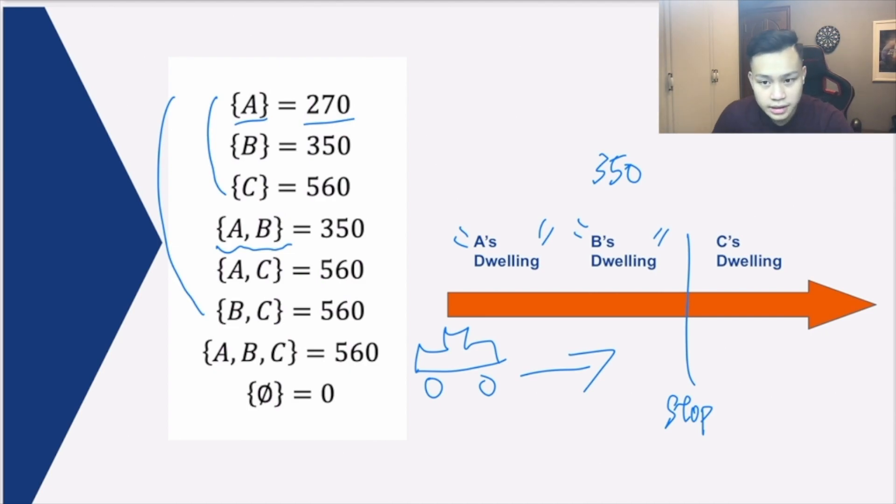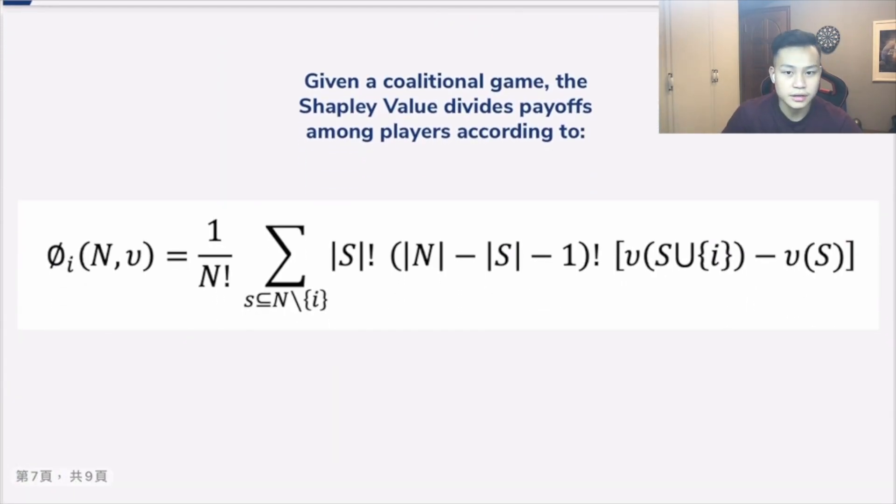We're assuming that A, B, and C are all living in the same route of taxi. So we give each of these subsets, these coalitions, a different payoff, which would be useful when later we're trying to calculate each of Alice, Bob's, and Catherine's marginal contribution to paying the taxi cost. What's interesting here is the last one, the empty set, which is associated with a value of zero. This basically means that when neither Alice, Bob, nor Catherine are taking the taxi, they wouldn't be paying anything to the taxi driver.